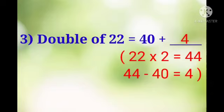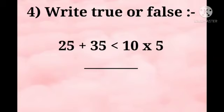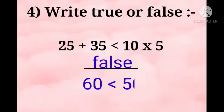Now next number 4. Right, true or false for the given statement. 25 plus 35 is less than 10 multiply 5. So first we will solve it. Left side we will get 60 and right side we will get 50. So this statement is false as 60 is greater than 50.